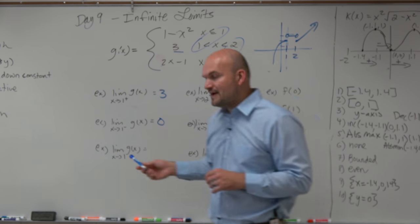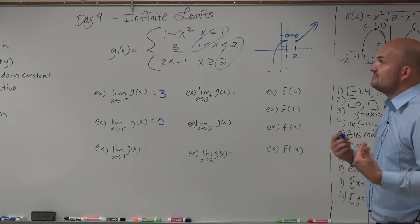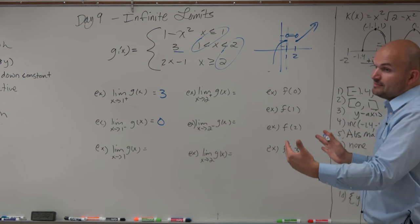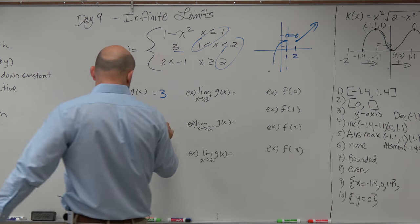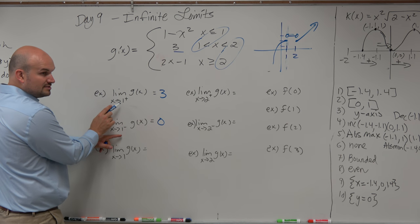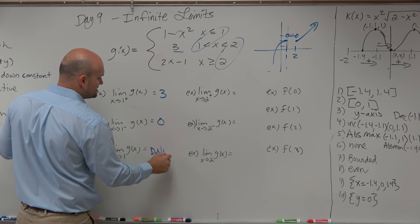And then over here, we have x is equal, or what is the value of 1. So therefore, the left and the right-hand limit have to equal the same. And do they equal the same? Does the left and the right-hand limit at 1 the same? No. So that limit does not exist.